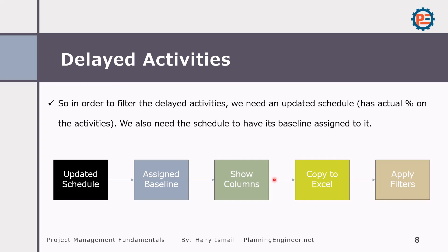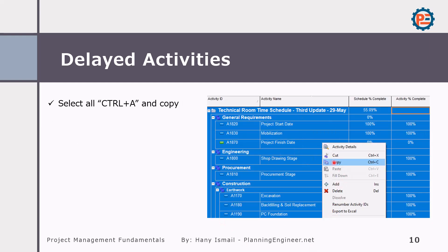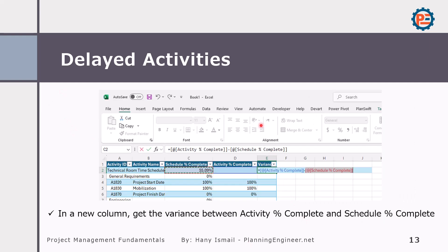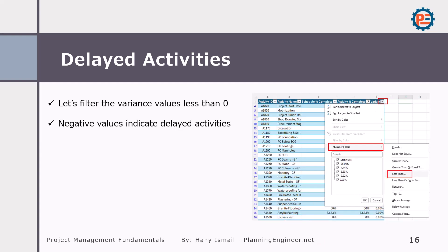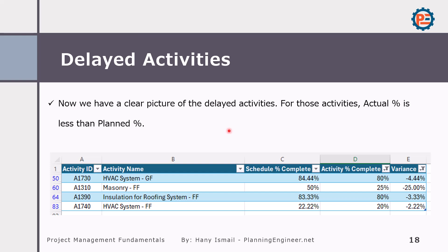You will find a link below this video to download the practice file so you can import it into Primavera P6 and follow these steps. If you don't remember how to import schedules to Primavera, please check the import and export video. After we open or import our schedules, we should show the schedule percentage complete and activity percentage complete columns. Then just right-click and copy. Go to any empty Excel sheet and paste. Press Ctrl+T to convert the data into a table, then add a new column to calculate the variance — which is planned minus actual. You will have a variance column and you can apply a filter on the variance to see negative values, or use number filtering set to less than zero, and it will give you the delayed activities. Let's go and see how to do this practically in Primavera.